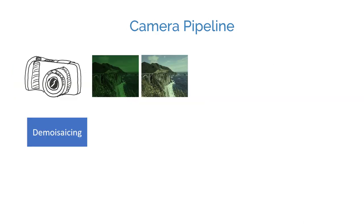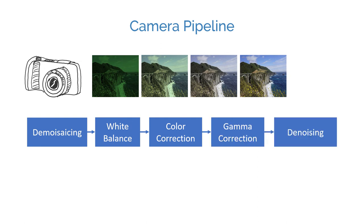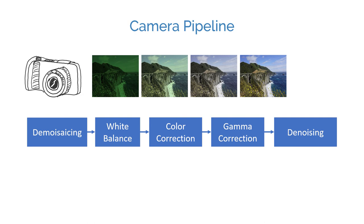This chain of processes is generally referred to as the camera pipeline. Each camera does it a little bit differently, but this is how the overall pipeline looks like. The order of these processing blocks might be different. For example, denoising can be done earlier. There can be additional blocks as well. The ones I showed here are the most basic processing blocks that many cameras use.